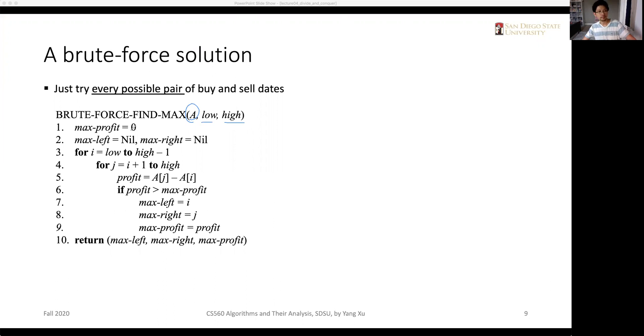So we can use two nested for loops to iterate over all possible buy and sell dates. And we use the variable max profit to store the maximum profit, the maximum solution, the optimal solution. And we use the max left and max right to indicate the optimal buying and sellout dates.